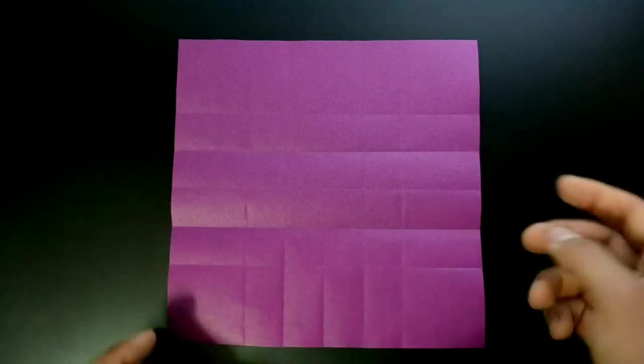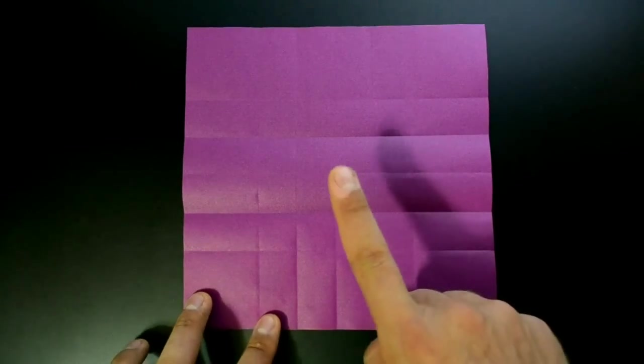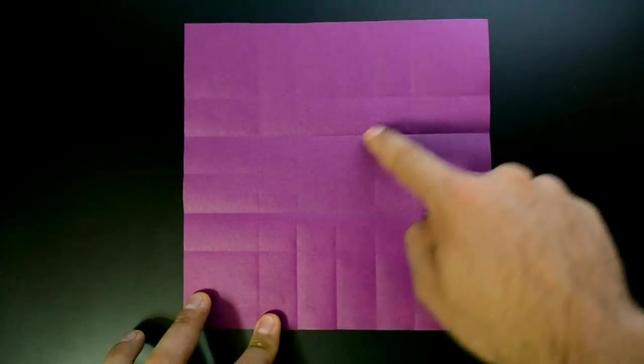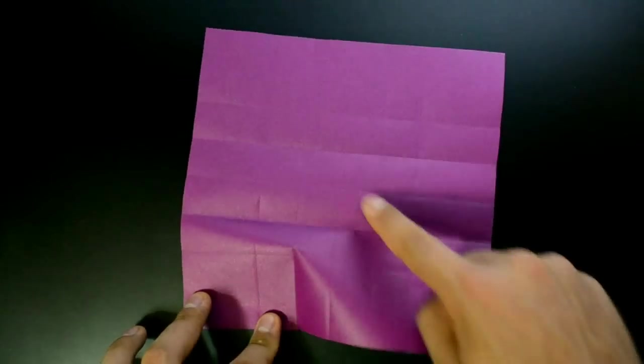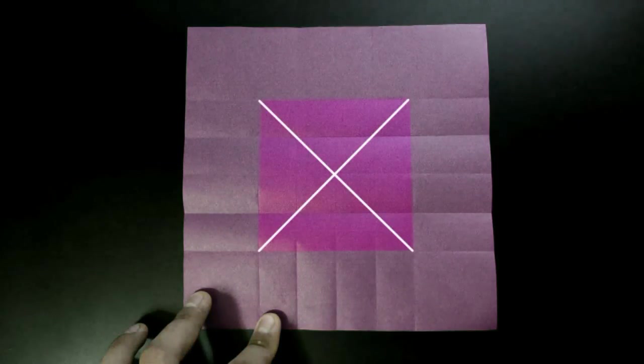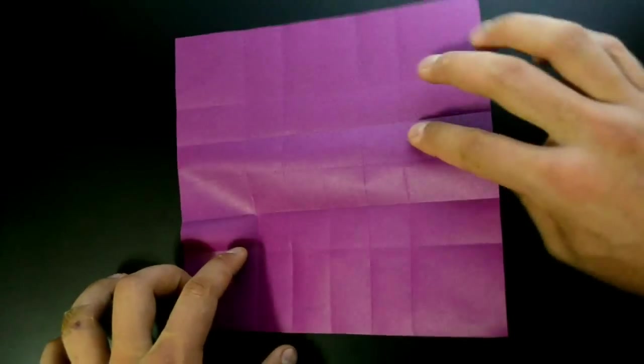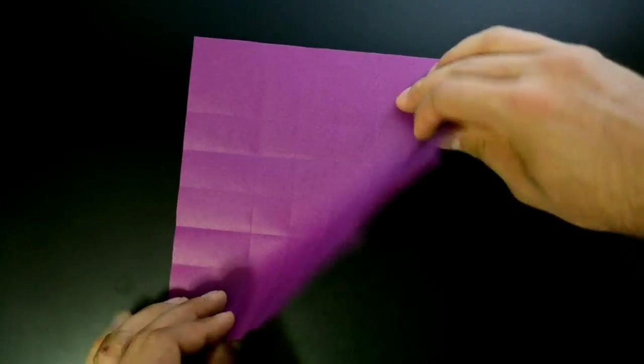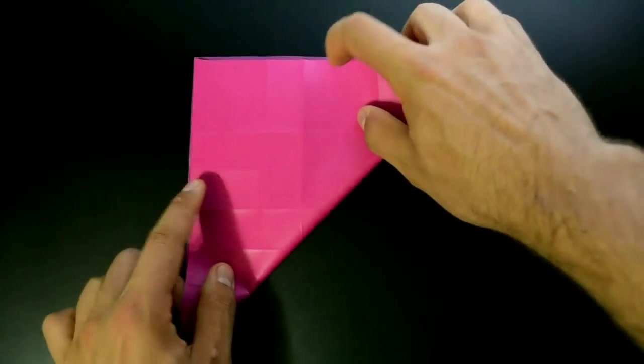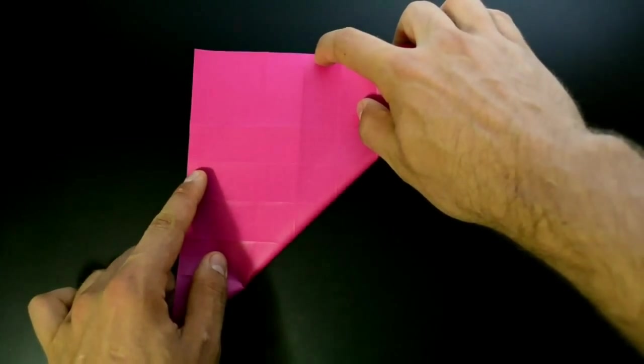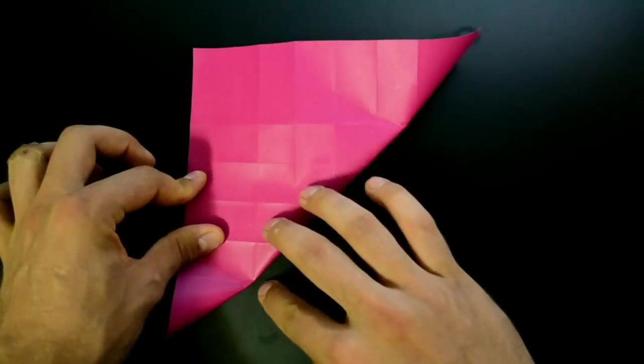Okay, with this done we need to fold two new diagonals connecting these points here. This square on the middle, on the center. Touch the corners and fold just on the center.